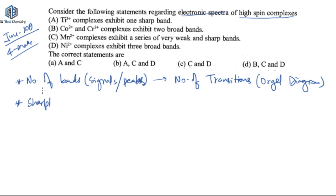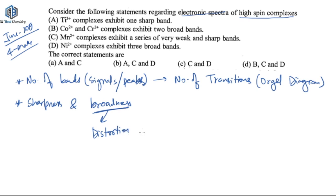The sharpness and broadness of the peak depend on a few factors. Broad peaks arise when you have two very close sharp peaks, making the overall peak appear broad. For metal complexes, broadness of peaks arises with Jahn-Teller distortion. If there is Jahn-Teller distortion in the complex, the peak becomes broad rather than sharp.